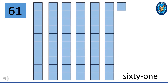This is 61. 6 and 1 make 61. 61 is made up of 6 ten-squared blocks and 1 square. 6 ten-squared blocks and 1 square make up 61.